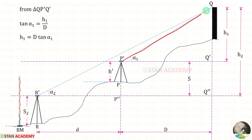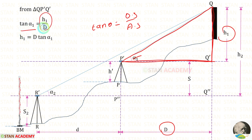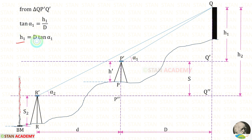Let us take this triangle. In this triangle let us use the tan theta formula. We know that tan theta equals opposite side divided by adjacent side. Here the opposite side is H1 and the adjacent side is D. So tan alpha 1 equals H1 upon D, which gives H1 equals D tan alpha 1.